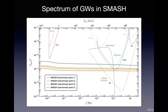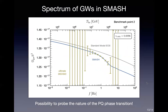This possibility is described by the ultimate DECIGO configuration. This figure shows a detailed comparison between the model prediction and experimental sensitivities. The blue line shows the prediction of the SMASH model, and we can see a step-like feature in the gravitational wave spectrum around 1 Hz. Compared with the sensitivity of ultimate DECIGO, shown by the dark yellow curves, in principle these non-trivial features can be identified in high-sensitivity experiments. So there is a possibility to probe the nature of the Peccei-Quinn phase transition from future high-sensitivity gravitational wave experiments.